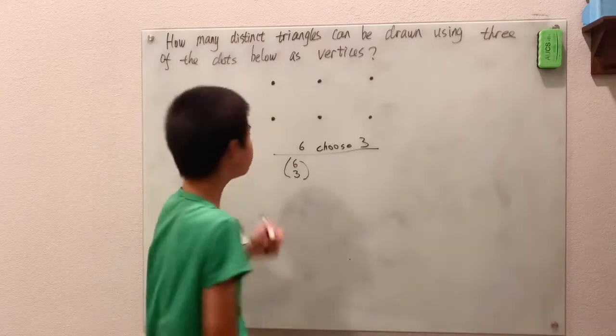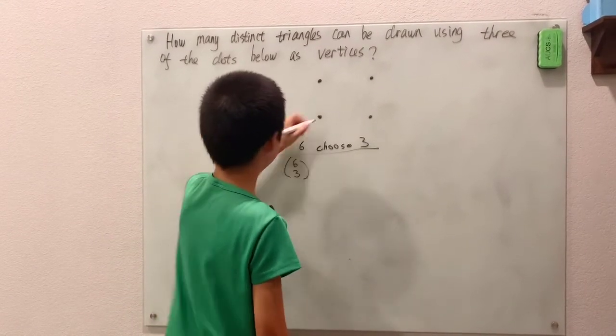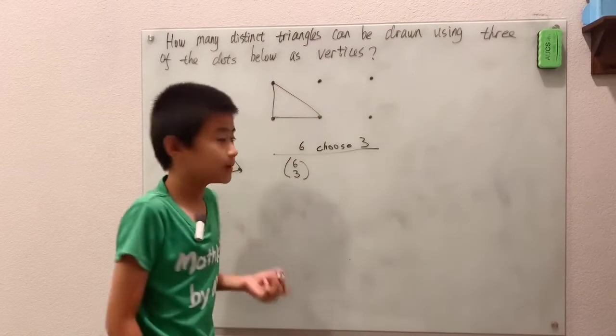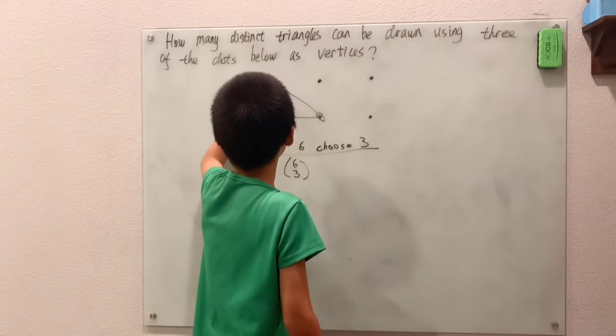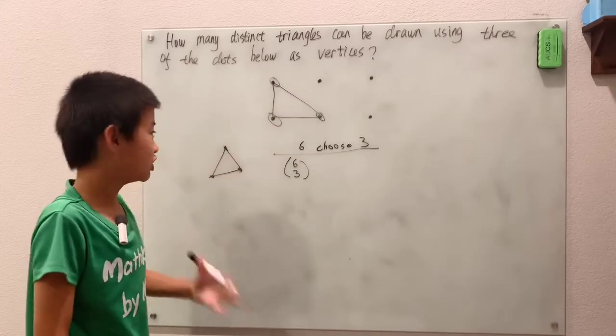For example, if you chose this dot, then this dot, then this dot, that's the same thing as choosing this dot and this dot and this dot. So it's six choose three because order doesn't matter.